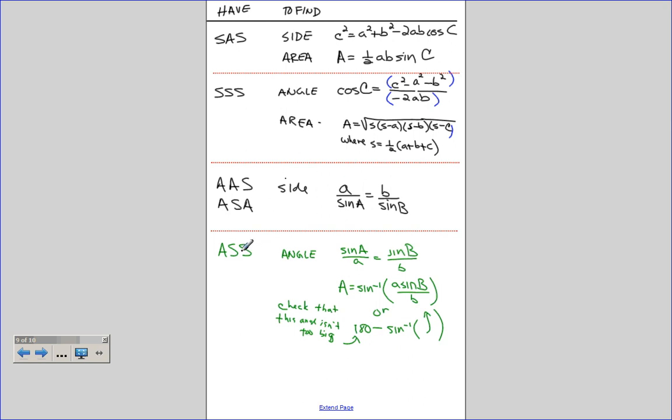If we have side-side angle, or angle-side-side, and we want to find an angle, what we do is we use the law of sines. And it gets a little tricky, because there could be zero, one, or two triangles. So we solve this, and then we take the inverse sine, and then we'd have to do 180 minus that, and see if 180 minus that makes sense.